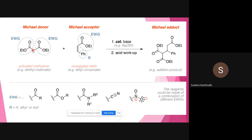The two hydrogens at the methylene carbon become highly acidic because two electron-withdrawing groups are present on both sides. These acidic hydrogens at the methylene group make it the Michael donor. This activated methylene compound is treated with a catalytic base: first an acid-base reaction occurs between the Michael donor and the catalytic base, generating an enolate, and finally acid workup gives the addition product — the Michael adduct.